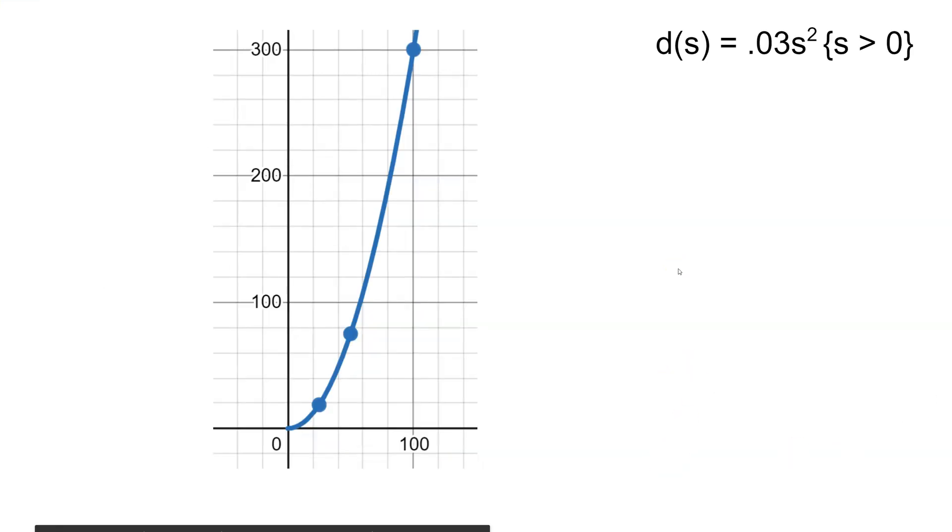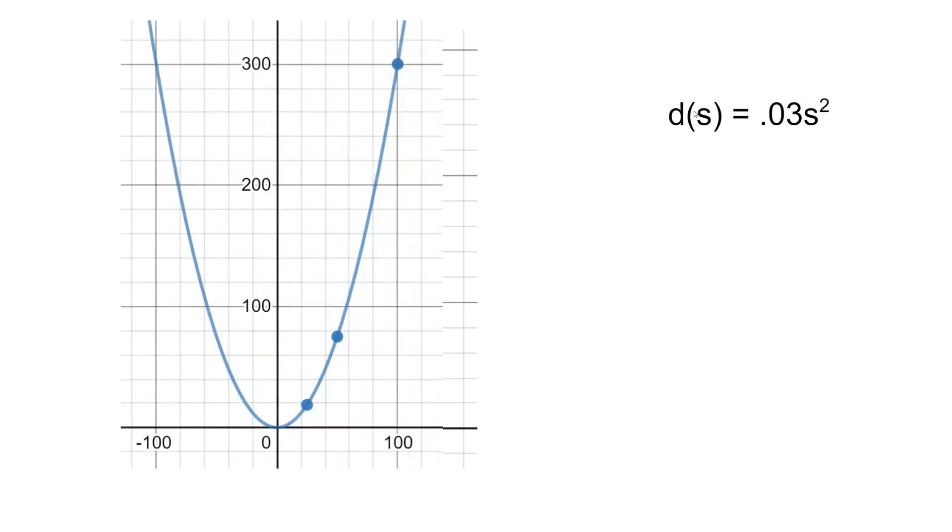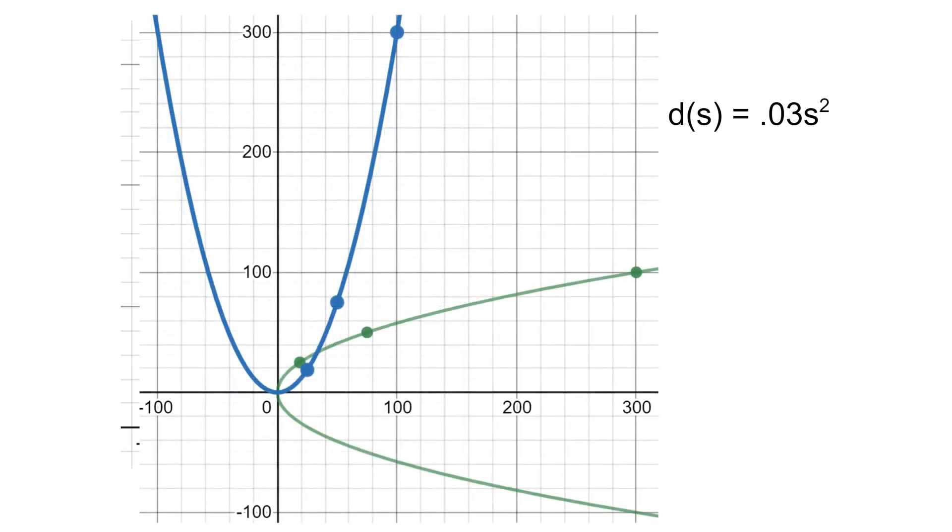Finally, the task ends with a couple problems asking us to consider this idea of restricting the domain. So if I did not restrict the domain of this function—so we restricted it to only positive speeds based on the context—but if we ignored the context and considered theoretically this entire function, this entire quadratic function, it would look like that. And the inverse in this case would now look like that.